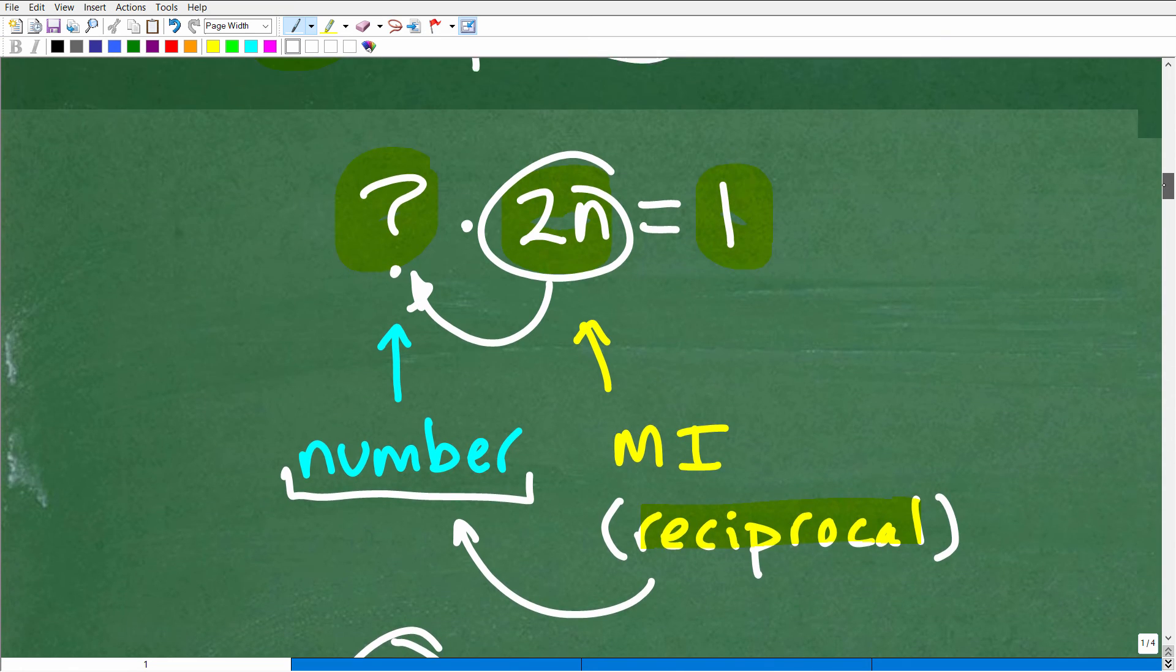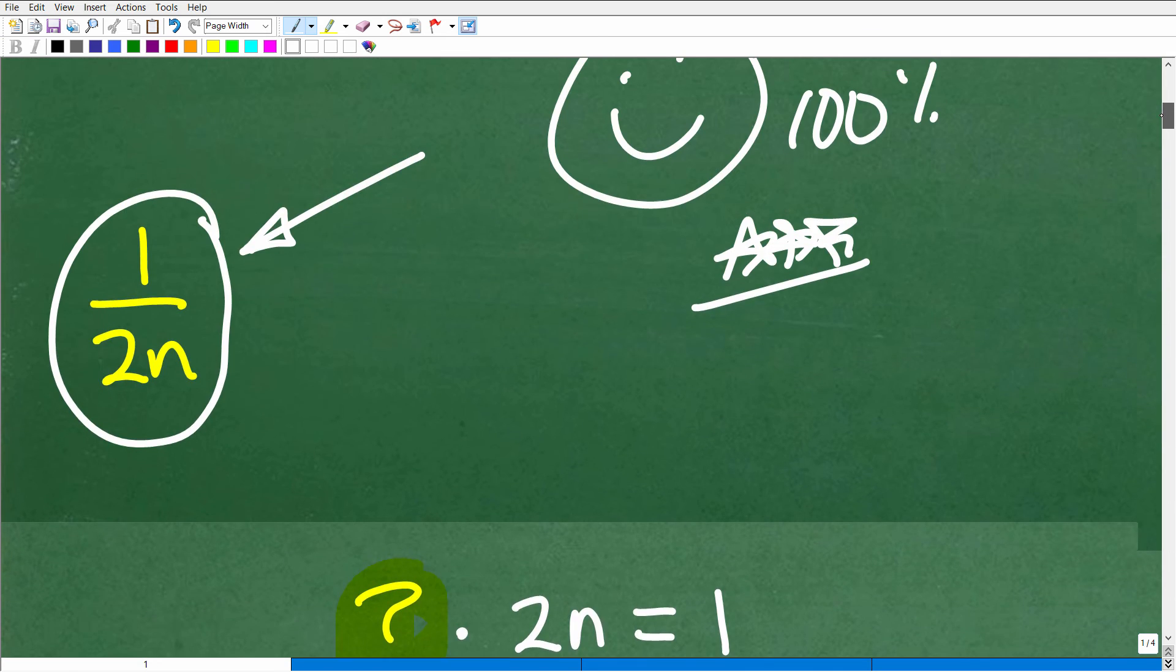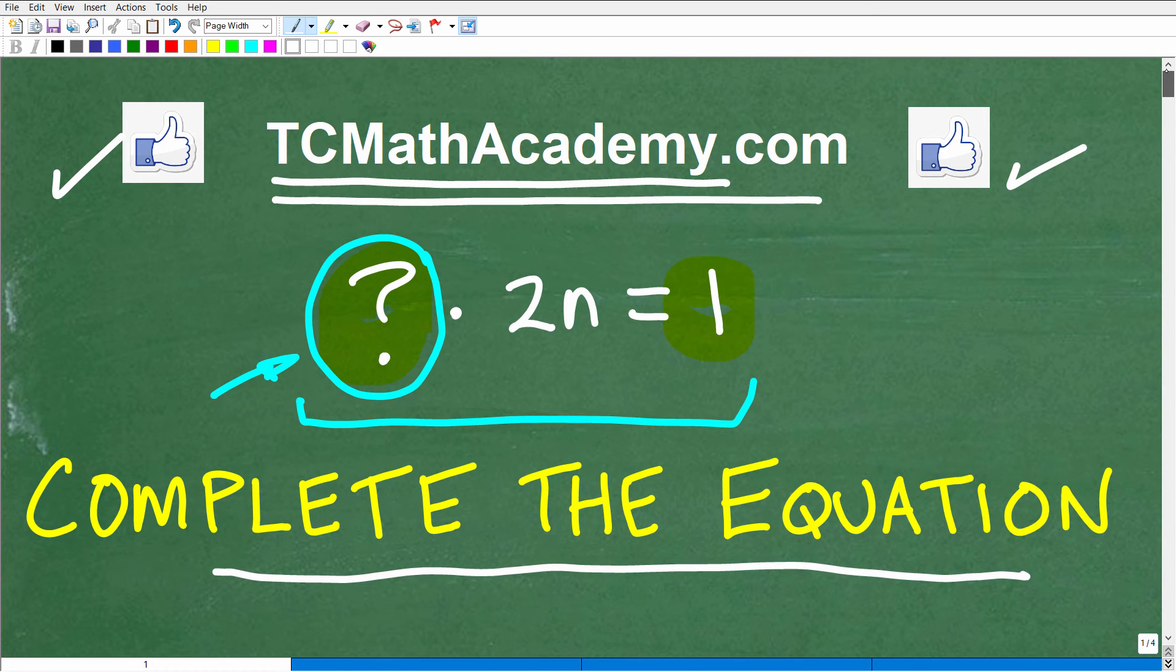So these properties, the associative property, the commutative property, identities, inverses, this is stuff that you definitely need to understand in mathematics. Now, a lot of students forget the names of the properties. They might be kind of familiar with it, but I can tell you right now, as you progress in mathematics, especially more advanced mathematics, all these properties are going to come back time and time again.